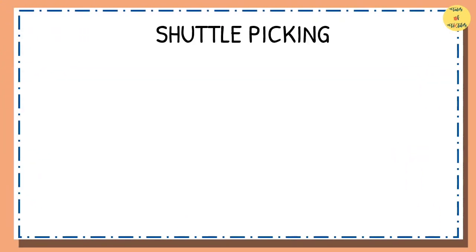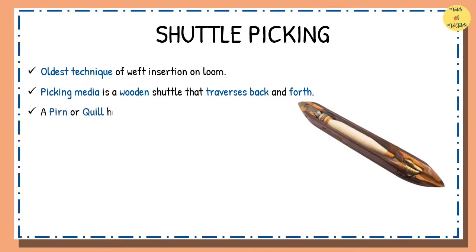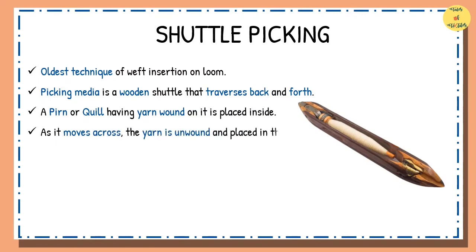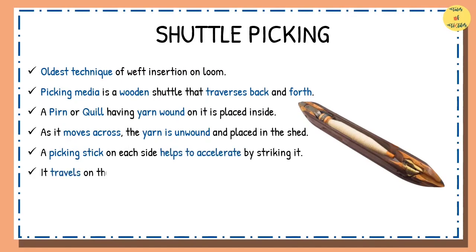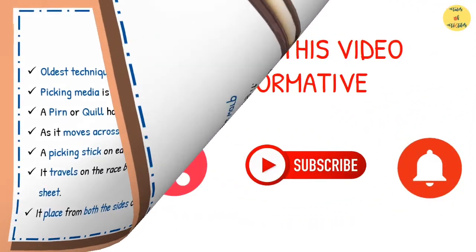Shuttle picking is the oldest technique of weft insertion on the loom. The picking media is a wooden shuttle that traverses back and forth across the loom width. A pern or quill having yarn wound on it is placed inside the shuttle. As the shuttle moves across, the yarn is unwound and placed in the shed. A picking stick on each side of the loom helps to accelerate the shuttle by striking it. The shuttle travels on the race board above the lower portion of the warp sheet, and shuttle picking takes place from both sides of the loom.